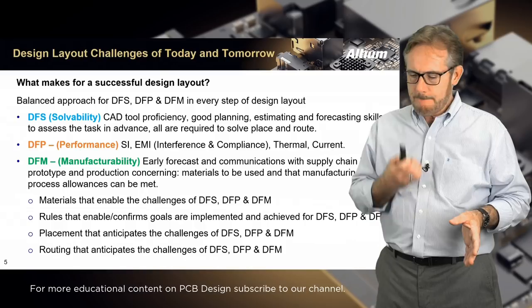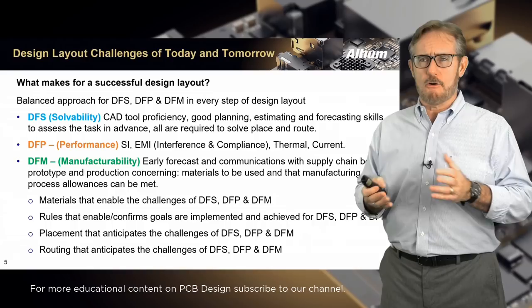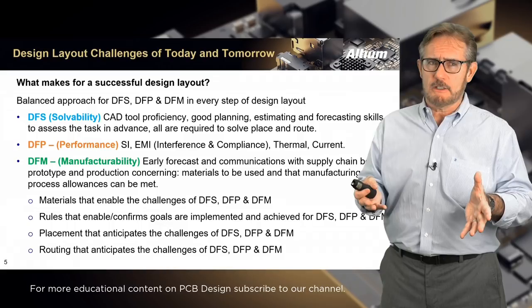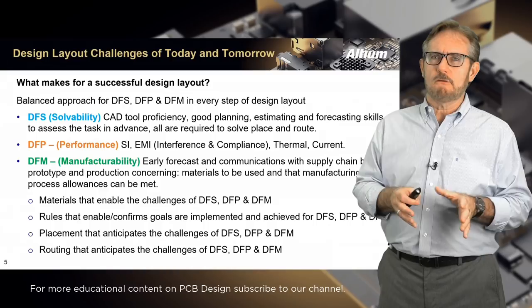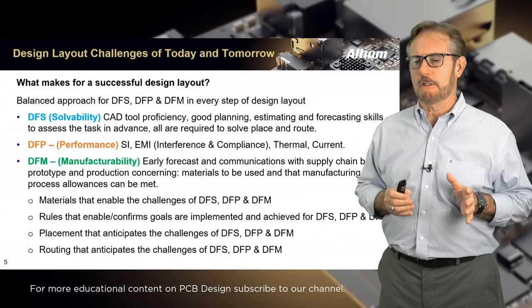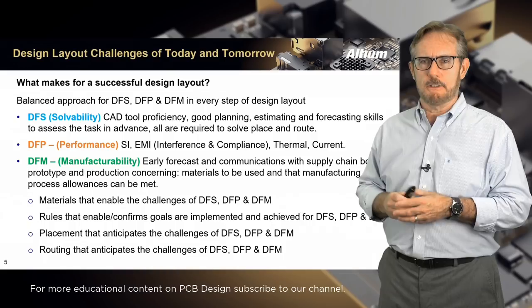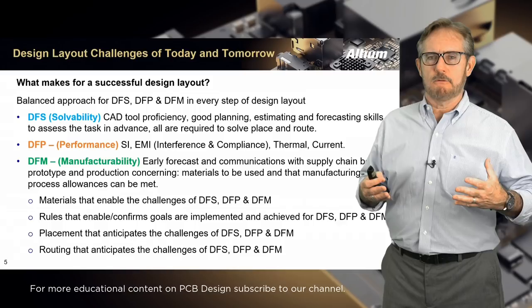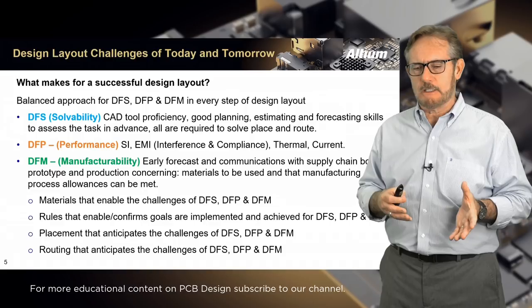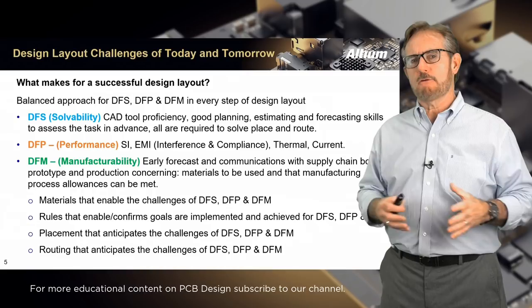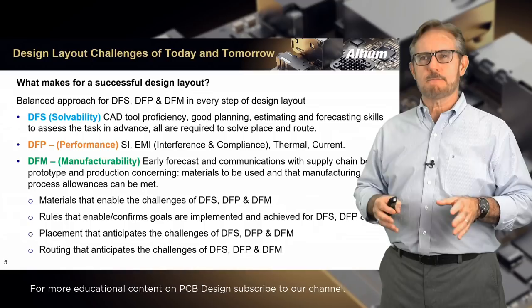For low-production, high-reliability products — like Class 3 medical or mil-aero — make better material and fabrication choices, because that small cost saving is not worth the reliability hit. You're going to make materials choices that enable those challenges, rules that confirm your goals are being implemented, placement that anticipates the challenges you'll encounter, and routing with a correct-by-construction methodology. You're anticipating solvability, performance, and manufacturing challenges at every stage.